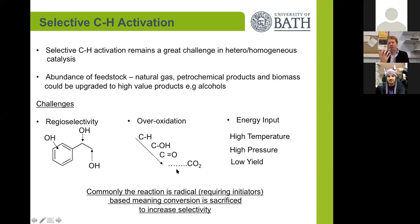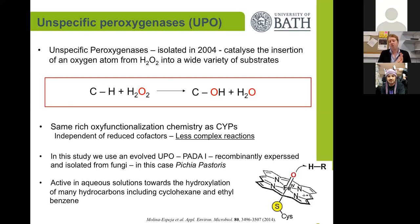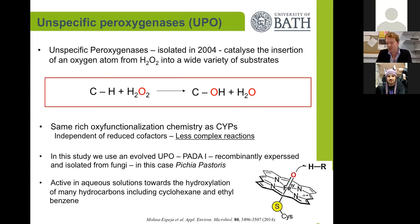Commonly these reactions in catalysis are radical-based, meaning that often conversion needs to be sacrificed for selectivity. One of the perfect catalysts to do this would be enzymes. We've been working with an unspecific peroxygenase isolated about 15 years ago from a fungus. This enzyme is able to take hydrogen peroxide and selectively insert one of the oxygen atoms into the CH bond, producing only water as a byproduct. This enzyme is active in aqueous solutions at ambient temperatures, but it needs a constant feed of hydrogen peroxide.